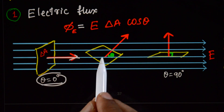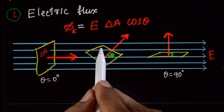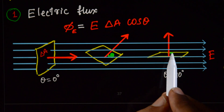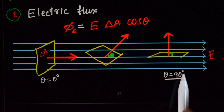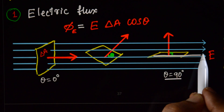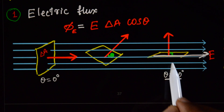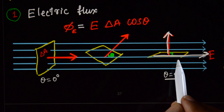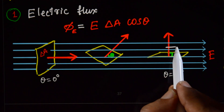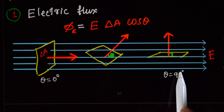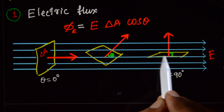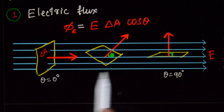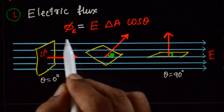If you tilt the frame, the amount of water flowing through it decreases. When theta equals 90 degrees, the direction of flow of water is perpendicular to the area vector of the frame, and the amount of water flowing through this frame is zero. Using this, we can express the electric flux.